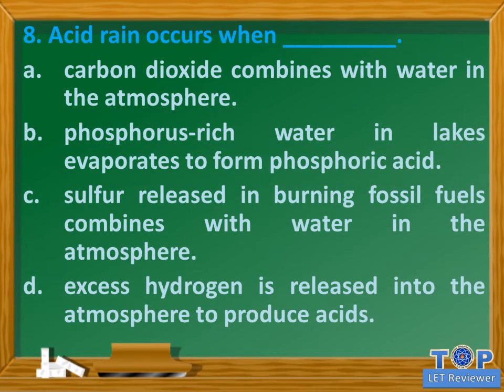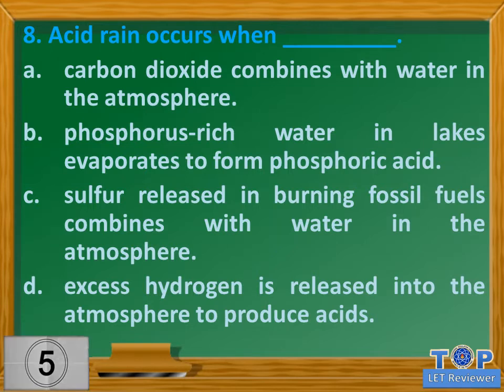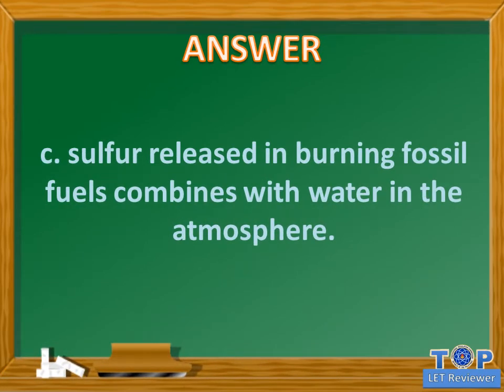Question number 8. Acid rain occurs when blank. A. Carbon dioxide combines with water in the atmosphere. B. Phosphorus-rich water in lakes evaporates to form phosphoric acid. C. Sulfur released in burning fossil fuels combines with water in the atmosphere. D. Excess hydrogen is released into the atmosphere to produce acids. Answer: C. Sulfur released in burning fossil fuels combines with water in the atmosphere.